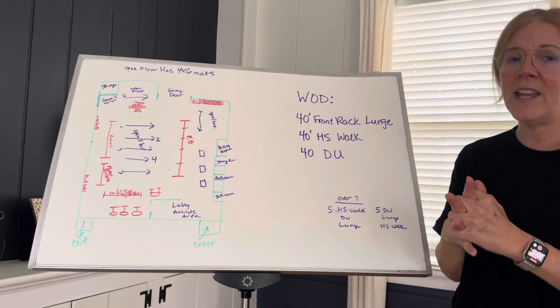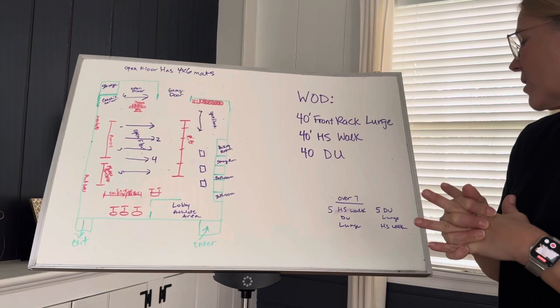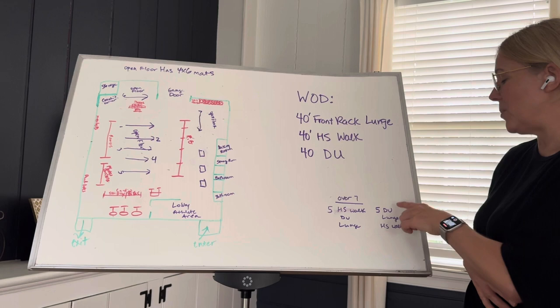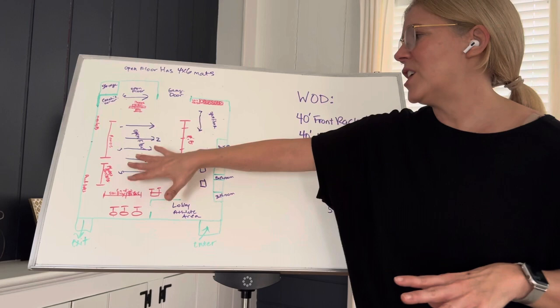Now, just to make it more challenging, I asked myself, what if I had 10 athletes, what would I do? And I thought one option would be to have five start with handstand walk, then go to double unders and lunges, and then five start with double unders, go to lunges and do the handstand walk.